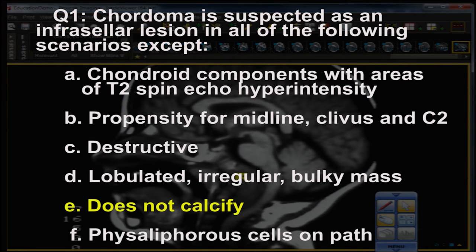The chordoma not uncommonly has chondroid components, as suggested in choice A. Those chondroid components have chondroid matrix co-mingled with other histologic types, and the chondroid components are bright on T2-weighted imaging — so A is a true statement. Choice B, propensity for the midline clivus and C2, is also a true statement.